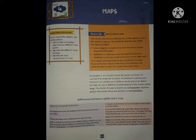Now maps and globes have some differences. A globe is a true model of the earth, and a map is a two-dimensional representation of the earth on a flat surface — on a flat paper or surface.